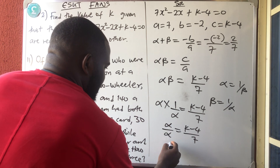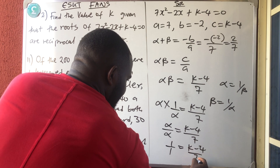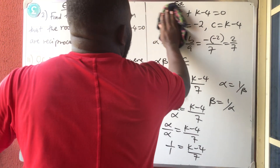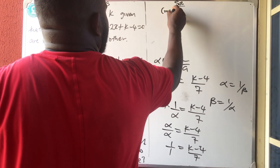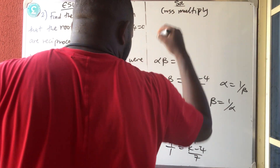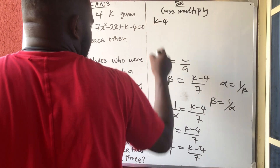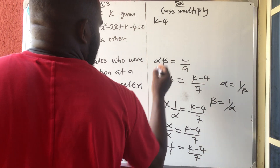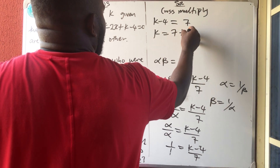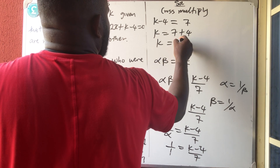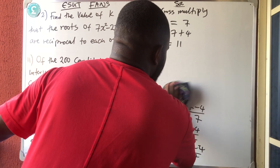So 1 over 1 — and alpha over alpha equals 1 — is equal to K minus 4 over 7. Anything divided by itself is 1, so 1 equals K minus 4 over 7. Cross-multiplying, K minus 4 times 1 equals 1 times 7, so K minus 4 equals 7. Collecting like terms, K equals 7 plus 4. Therefore, K is equal to 11.